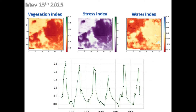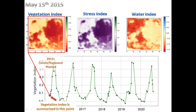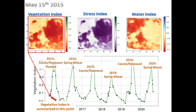We collected satellite data from May 15, 2015, just before summer started, and continued until the end of harvesting season in 2020, and plotted the historical vegetation index of the farm. Each data point in the graph is the average NDVI of the farm for the date the satellite image was taken.